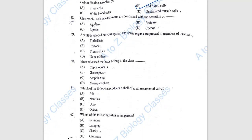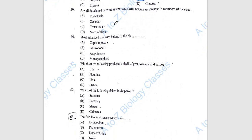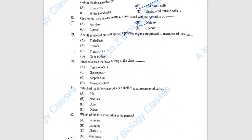Question 58: Chromophil cells in the stomach are concerned with the secretion of protease. Question 59: A well-developed nervous system and sense organs are present in members of the class Tubularia.